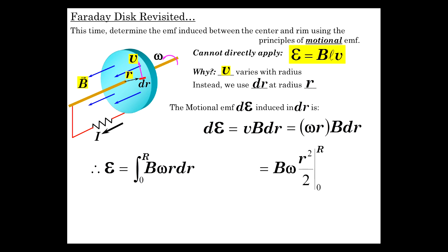The EMF is the integral from 0 to R of all those differential EMFs. B omega R dR, with B omega constant, gives R squared over 2 evaluated from 0 to R, which is one half B omega R squared. Using this method, we get the same EMF induced from the center to the edge on our Faraday disk dynamo. And now you are experts on this device.